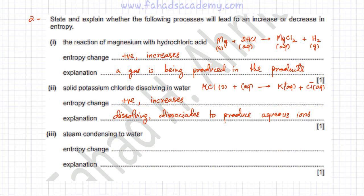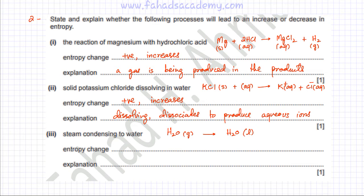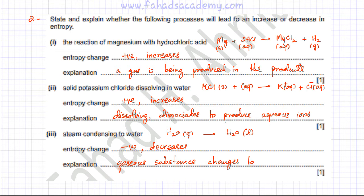The third process is that steam is condensing to water: H₂O(g) → H₂O(l). As we've discussed, whenever there's a state change, gases have higher disorder and liquids have less disorder. So entropy is decreasing — the disorder decreases when you move from a gaseous substance to a liquid. Entropy change in this case is negative. The reason is that a gaseous substance changes to a liquid, and liquids have lower disorder. Since this was only a one-mark explanation, a simple one-line justification is enough.